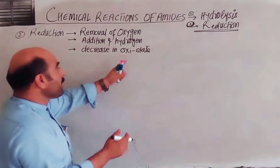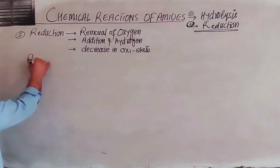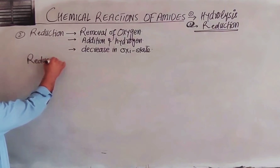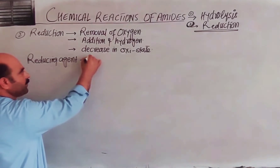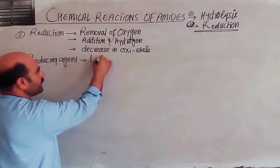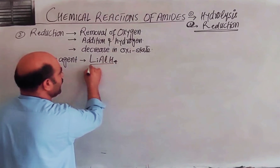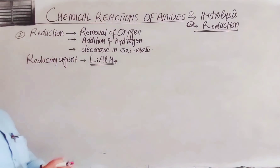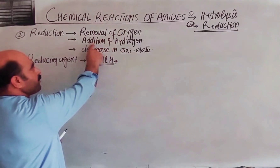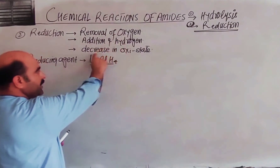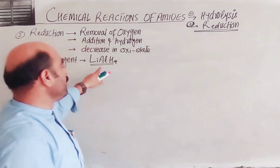We use a reducing agent. A strong reducing agent is lithium aluminum hydride. The reducing agent is an agent which removes oxygen, provides hydrogen, and decreases the oxidation state of carbon. Lithium aluminum hydride is the strong reducing agent used here.